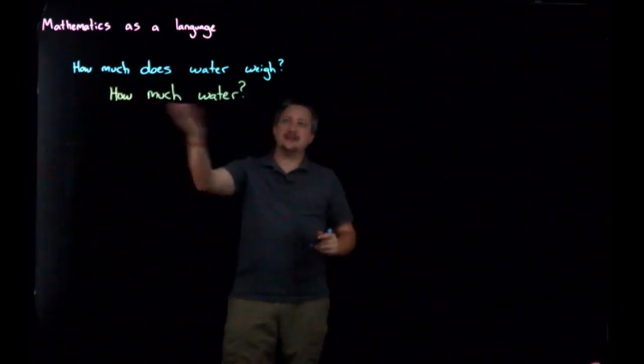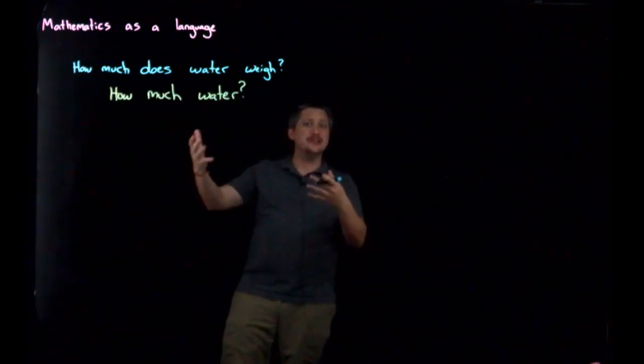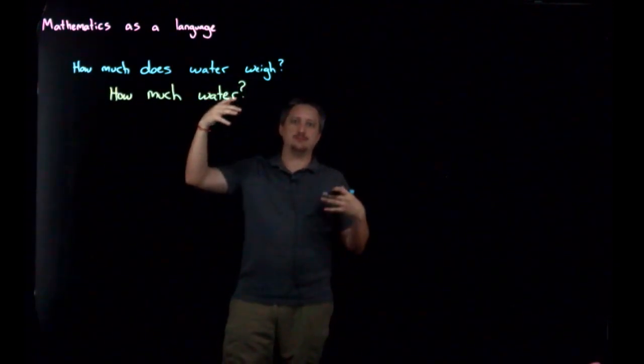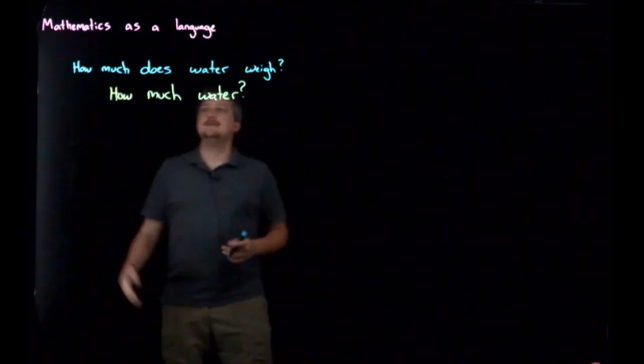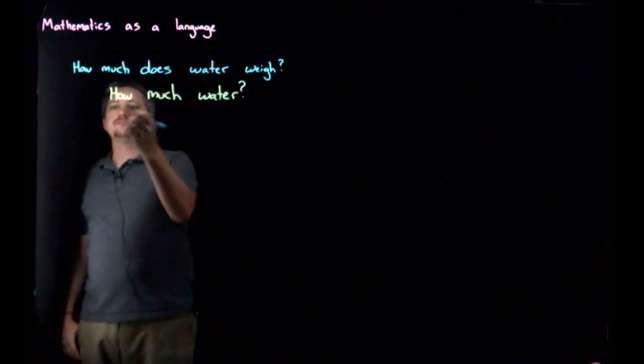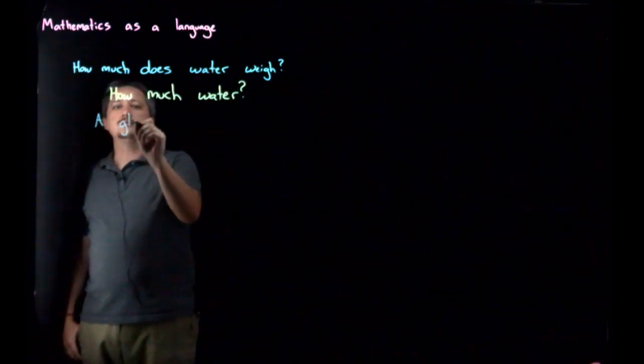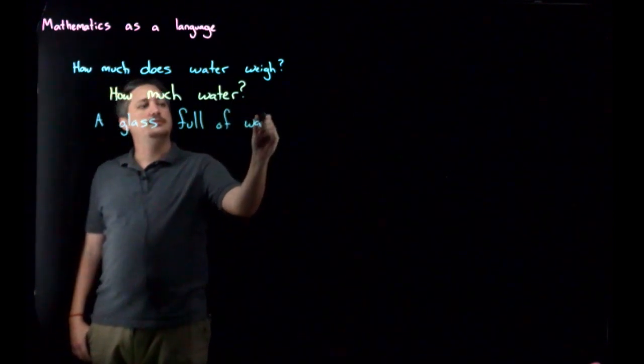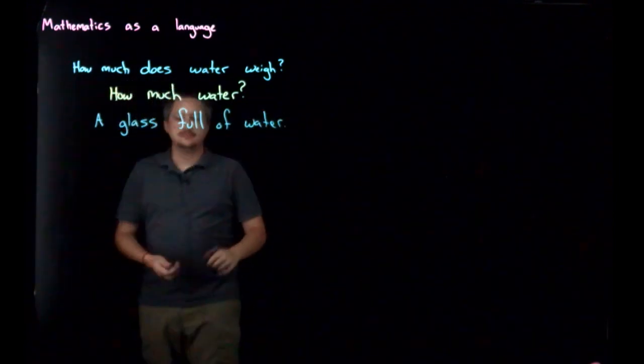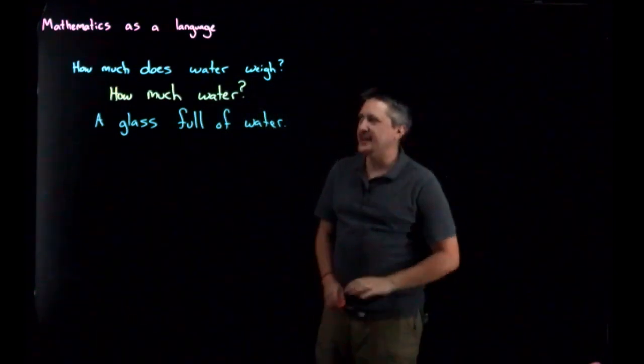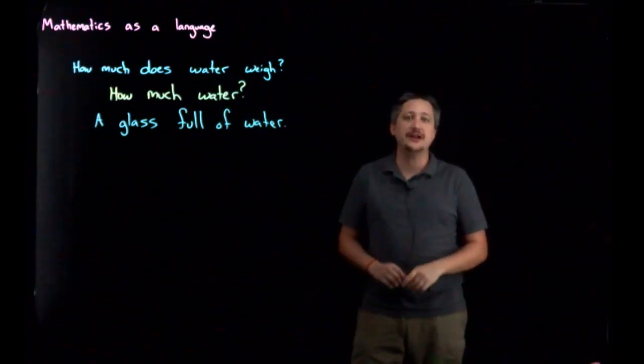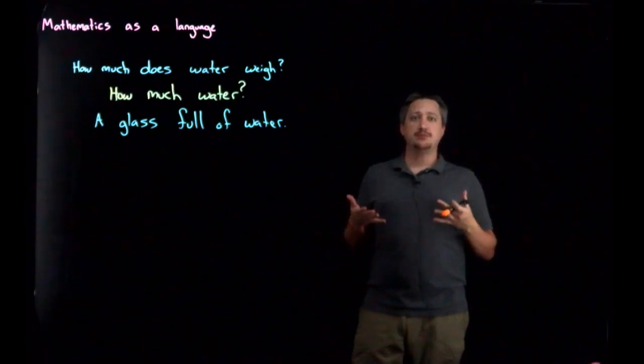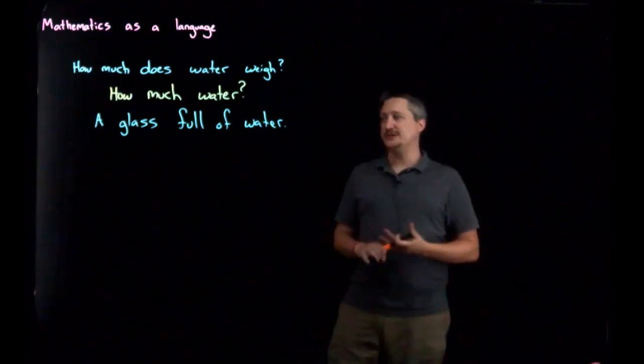If somebody asks how much does water weigh, I say, how much water? This is the phase one thing we talked about before, but this is more to demonstrate the key difference between precise language and vernacular language. So I could answer this: okay, I guess, let's say a glass full, a glass full of water. So now, at least, I have some unit of measurement, a glass. I know I'm not looking at an ocean full of water, but again, this is still vernacular. This isn't precise. This isn't a specific known quantity.